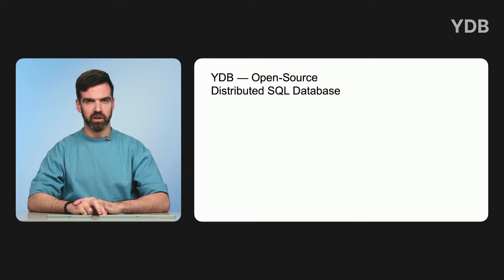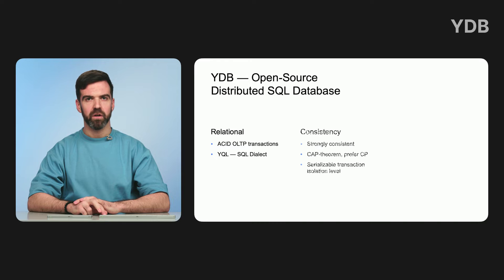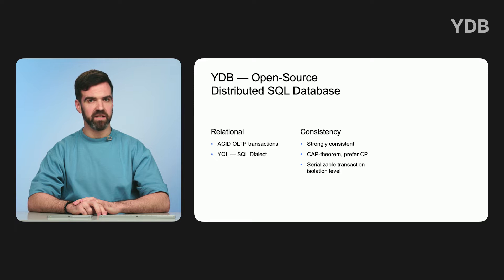Its key characteristics include support for high performance multi-row and multi-table ACID OLTP transactions, support for the declarative query language YQL — a dialect of SQL — and strong consistency with the possibility to relax guarantees for better performance. From a CAP theorem point of view, YDB prefers consistency in case of network partitioning, making this a CP system.